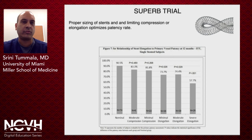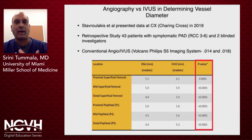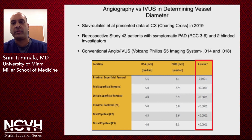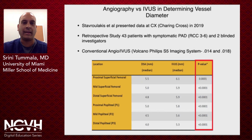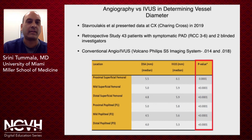The SUPERB trial studying the SUPERA stent showed that proper sizing of stents, limiting compression or elongation, really optimized patency rate. Data presented at Charing Cross in 2019 looked at 43 patients with symptomatic PAD using two blinded investigators comparing angiography and IVUS, examining whether there was a difference in determining true vessel size. There was a significant undersizing of the angioplasty balloon or stent based strictly on angiography compared to IVUS, and this was statistically significant. IVUS is definitely better at determining true vessel diameter.